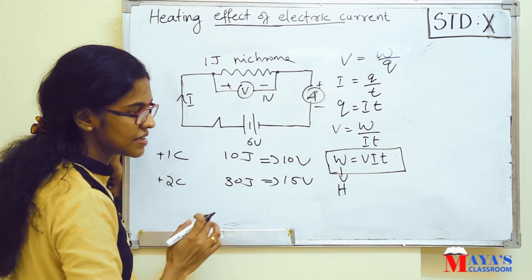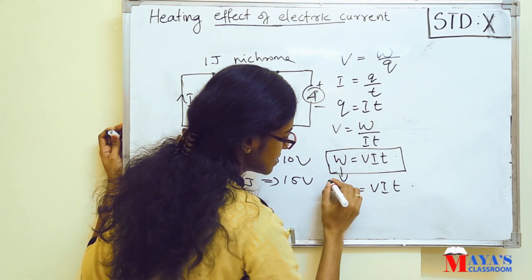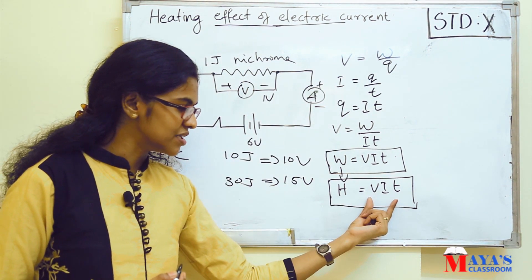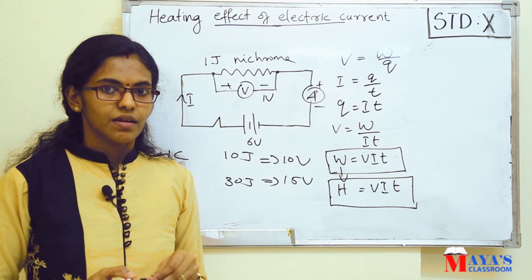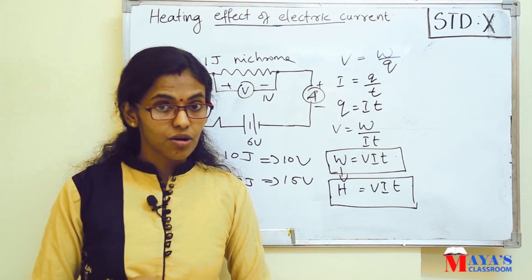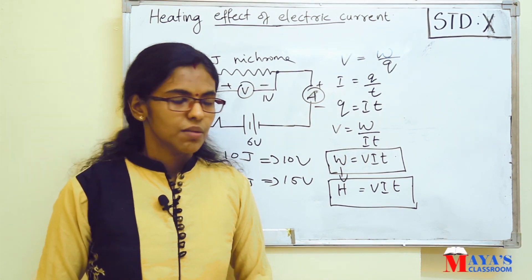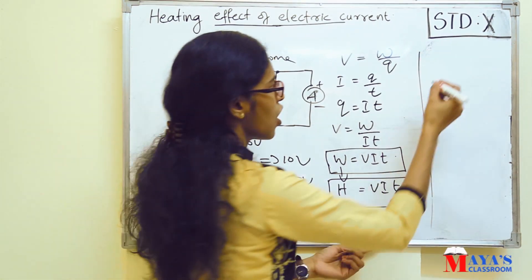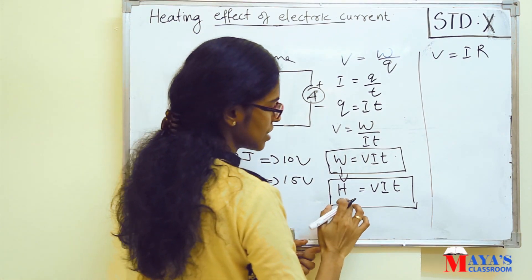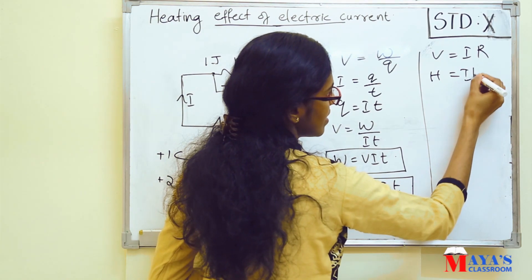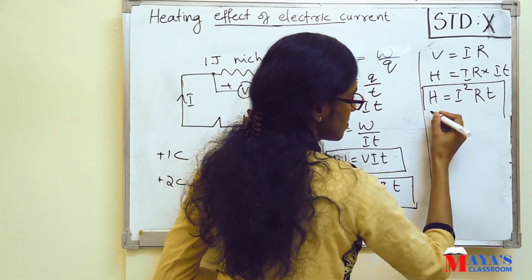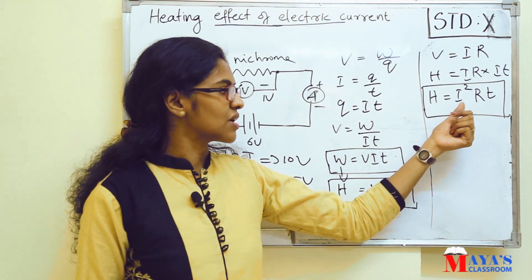H is equal to VIT. Here is the equation: H is equal to VIT. This is the heat produced in the circuit. When we apply the voltage, the current develops and electrical energy is converted to heat energy. We know that V is equal to IR from Ohm's law. Substituting, H equals IR into IT, so H is equal to I squared RT. This is the heat equation: H is equal to I squared RT.